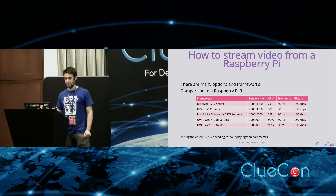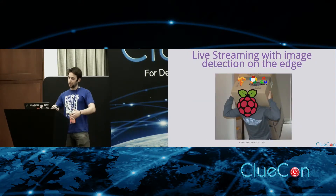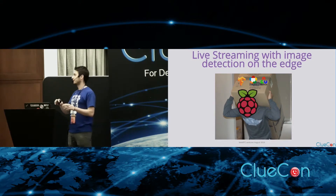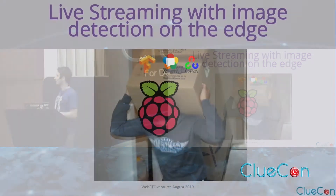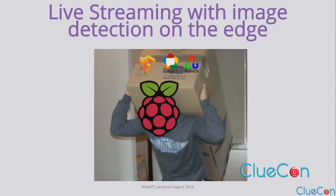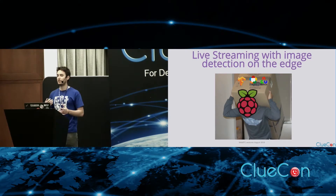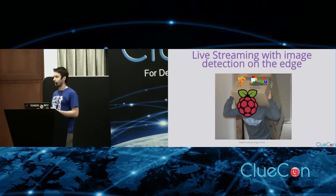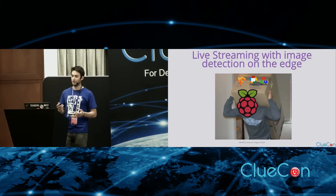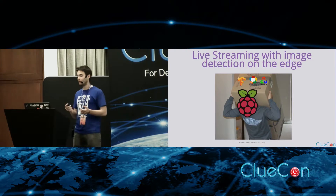Once you've decided on your preferred framework, you can do processing on the edge or on the server. If you do it on the edge and Raspberry Pi needs to handle that, you'll probably need additional hardware to improve the GPU of the Raspberry Pi. But without that, you're going to find a lot of problems.